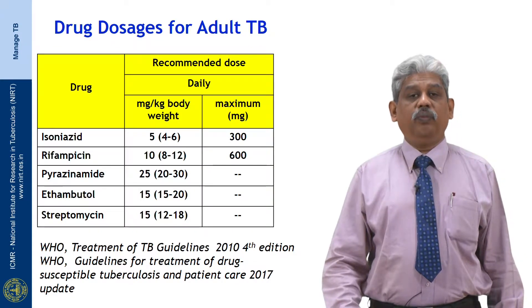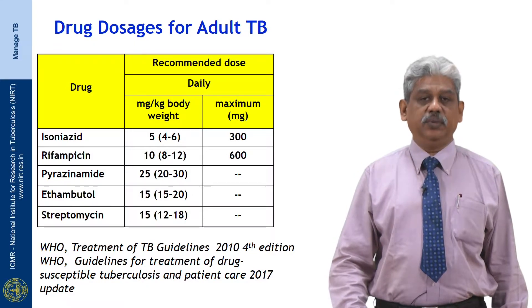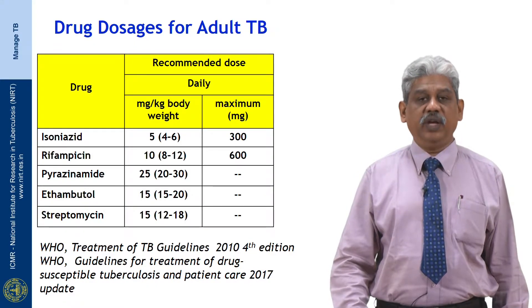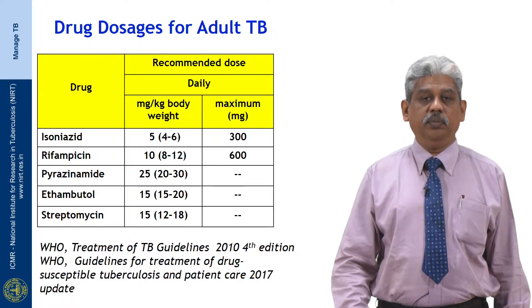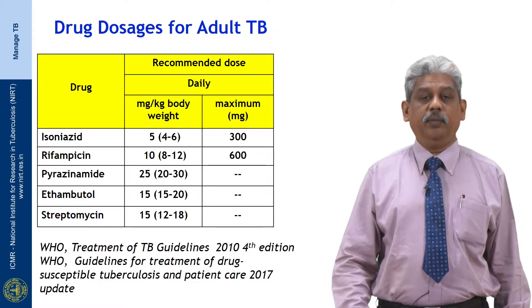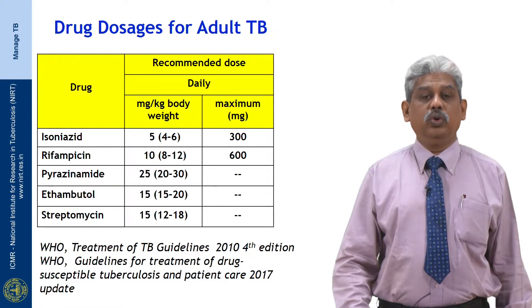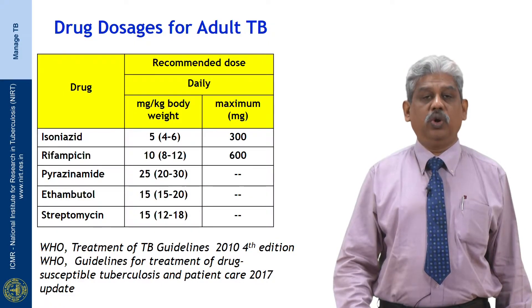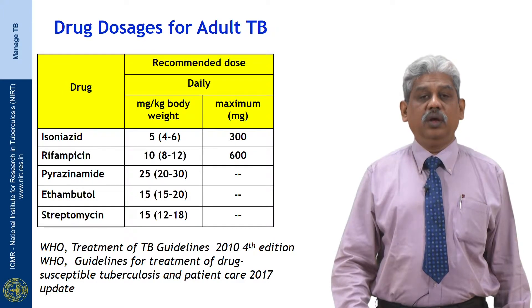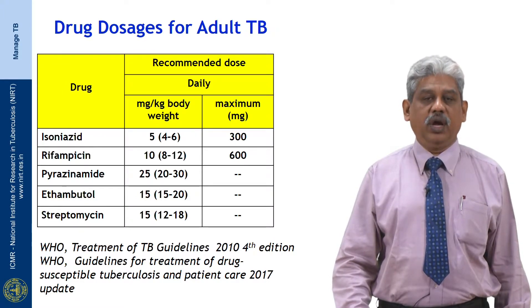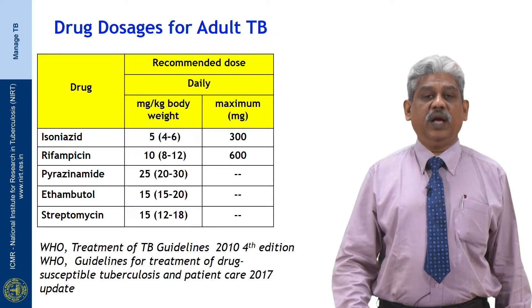We have to have proper dosage as far as the daily regimens are concerned — it is not like in those days when we were giving intermittent therapy. For INH it is 5 mg/kg, for rifampicin it is 10 mg/kg, ethambutol is 15 mg/kg, streptomycin is 15 mg/kg, and pyrazinamide is 25 mg/kg. For INH and rifampicin, the maximum dose is 300 mg and 600 mg respectively, regardless of weight. Even if a patient is 70 kg, you cannot give 700 mg of rifampicin — you must give 600 mg.